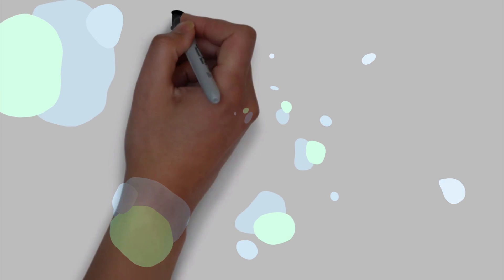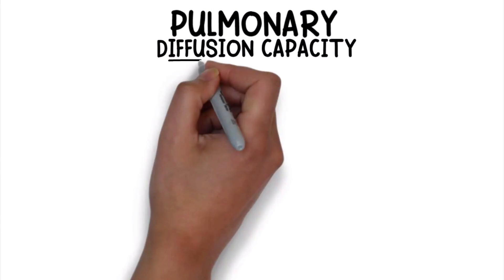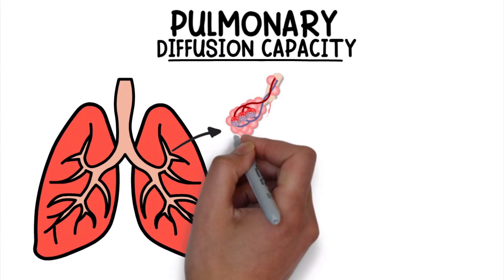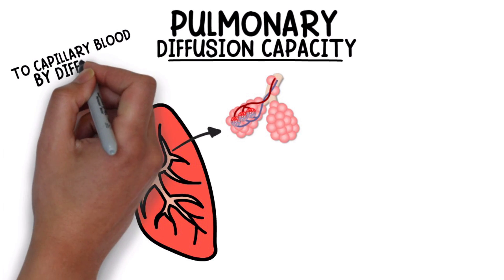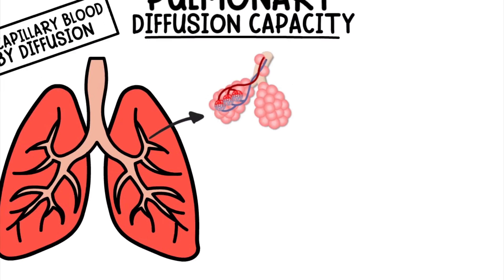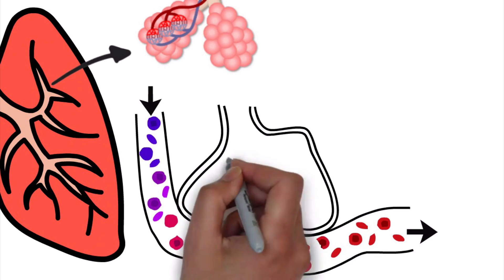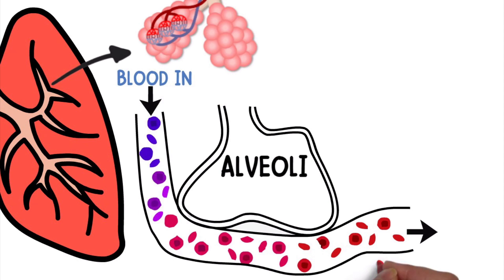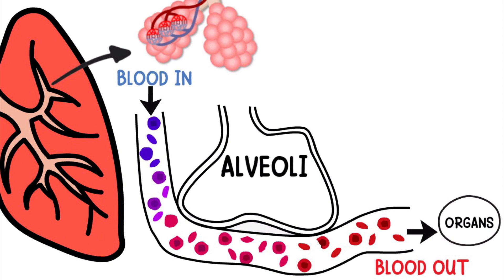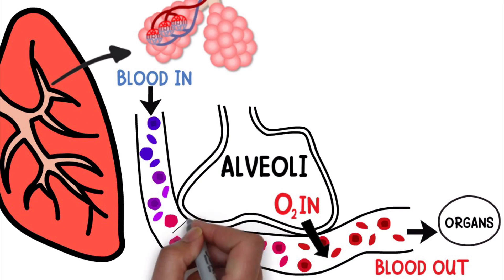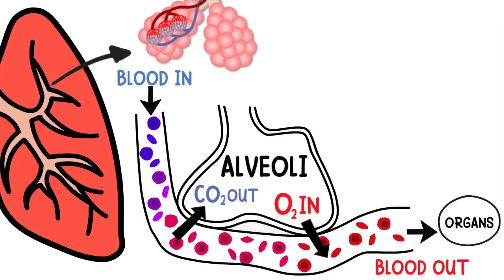What is Pulmonary Diffusion Capacity? It's defined as the amount of gas that is transferred from the alveoli in the lungs to capillary blood by diffusion. Once air from the lungs crosses the alveolar capillary membrane, it is picked up by red blood cells and transported to the organs and tissues of the body. The primary goal of the lungs is to take in oxygen and remove carbon dioxide during a normal breathing cycle.